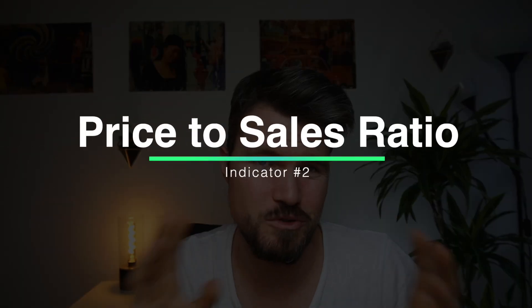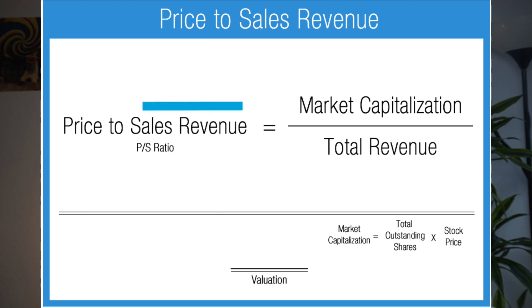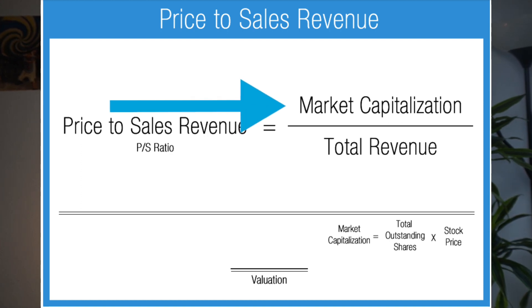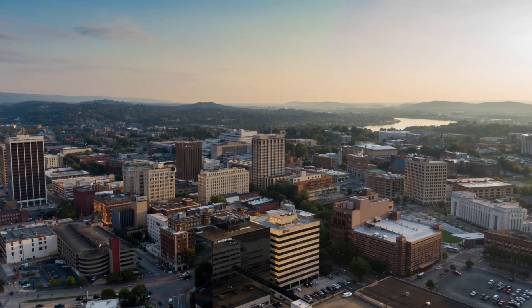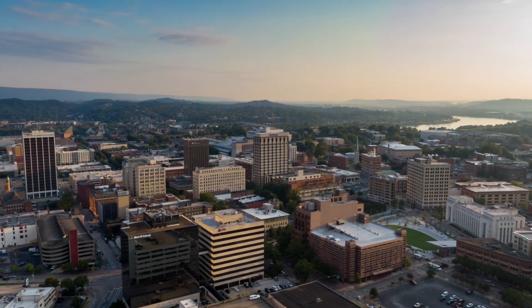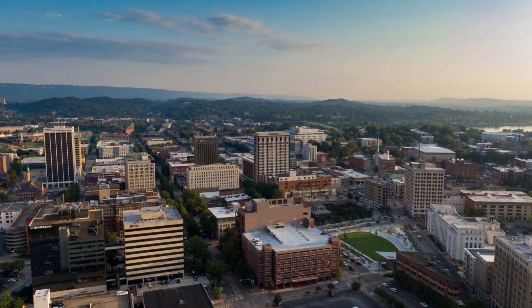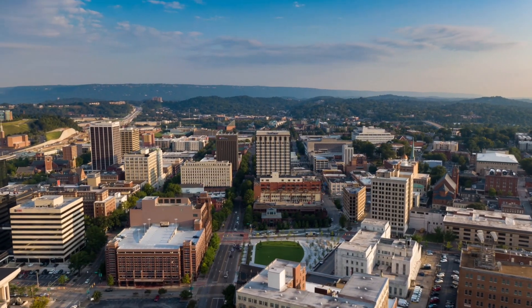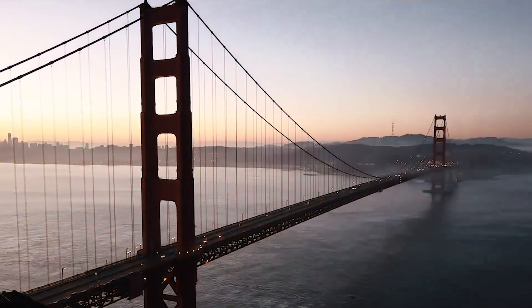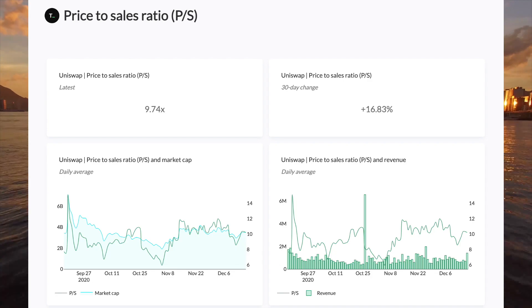The second indicator is the price-to-sales ratio. It's basically a calculation that compares the price of a stock to the revenues of a company. In the DeFi space, many protocols are already earning quite a lot of revenue. You can compare the total market cap of a certain DeFi application and divide it by the amount of revenue that the DeFi app is bringing in. This ratio can help you figure out if a certain DeFi asset is overvalued or undervalued. Note that many yield farming platforms will generate revenue in the form of their own token, which does not actually have any intrinsic value. You can check out the price-to-sales ratio at tokenterminal.com, which is a fantastic tool.